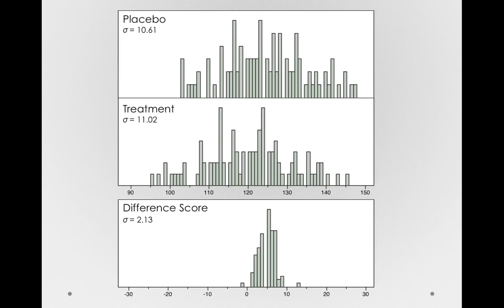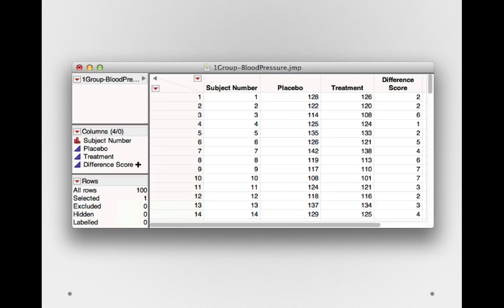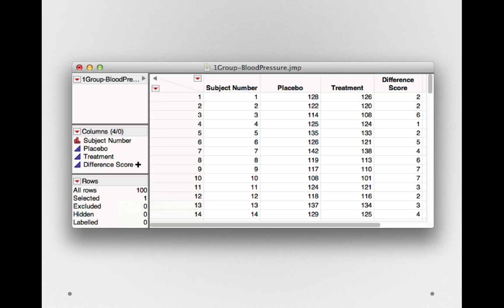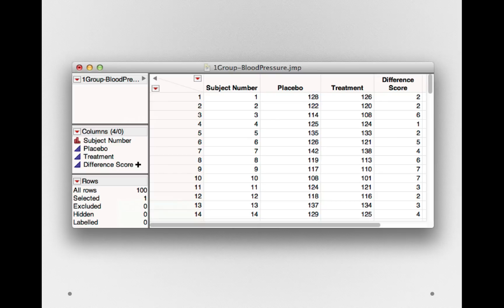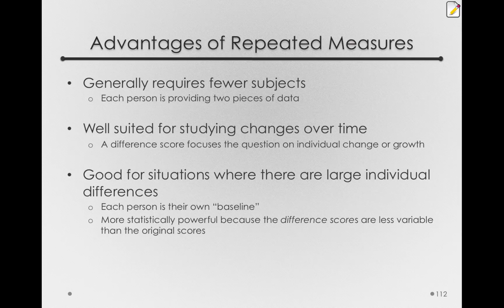So this is one reason why a repeated measures design will tend to be more statistically powerful. Because what we're analyzing is that difference score column. And so if our difference score column is less variable, we tend to have more statistical power. This goes back to the power module. Notice that one of the factors that affected power was the population variance or variability. Because the difference scores tend to be less variable than the individual measurements across people, we actually get more power or we're more likely to detect an effect if there's one actually there. So there are several advantages to repeated measures that we should take into consideration when we're designing our studies.